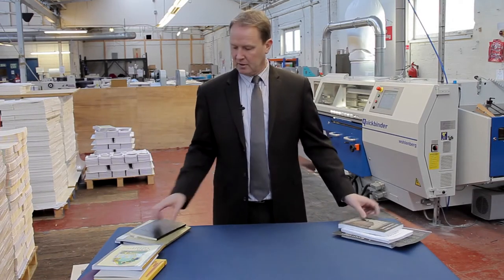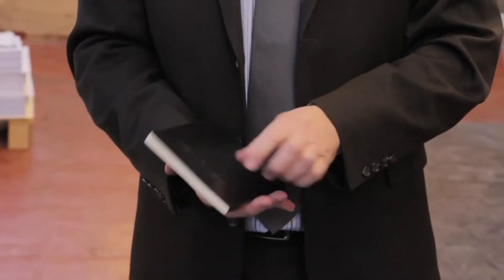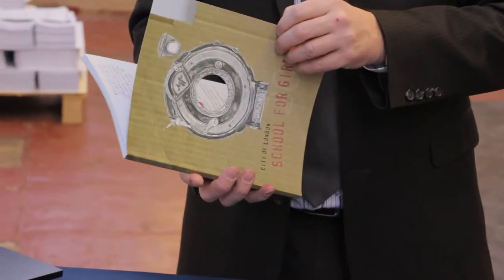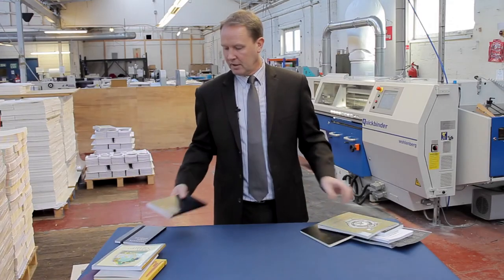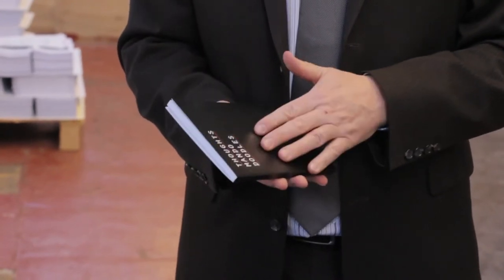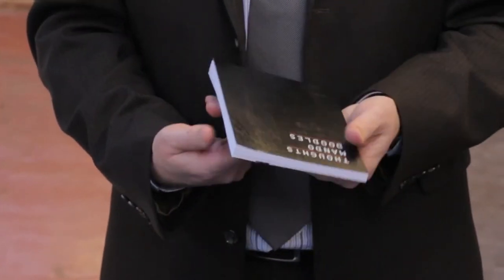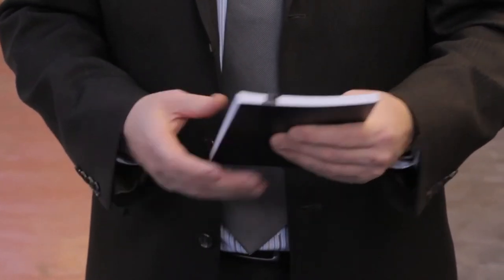But how do we enhance the appearance of one of these books? Well there are several ways. You can add round corners. You can die cut the front for added interest. For extra strength you can section sew the inners and draw on a cloth cover. This allows you the option to foil block. You can even add an elastic strap. Several ways of enhancing a perfect bound book.